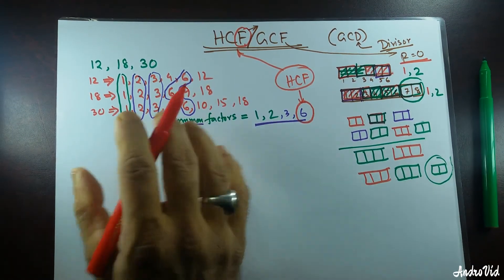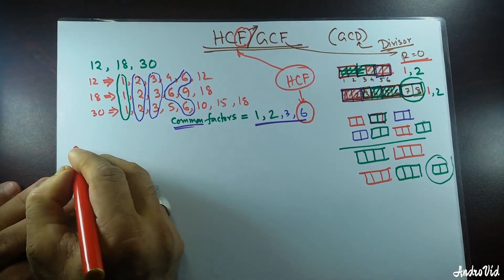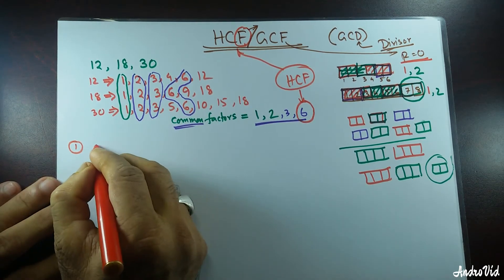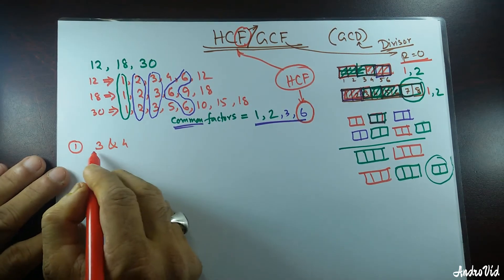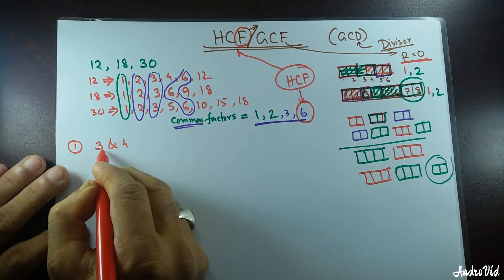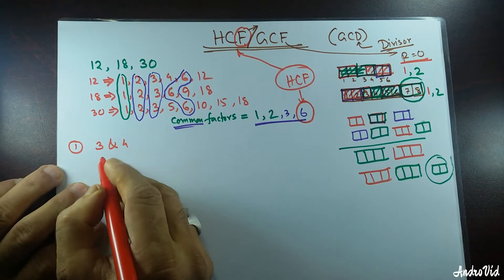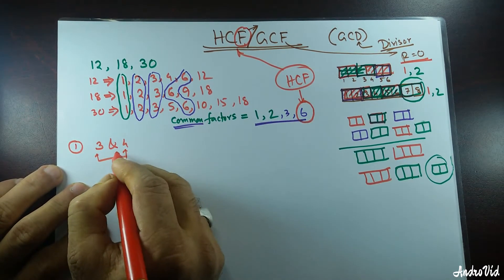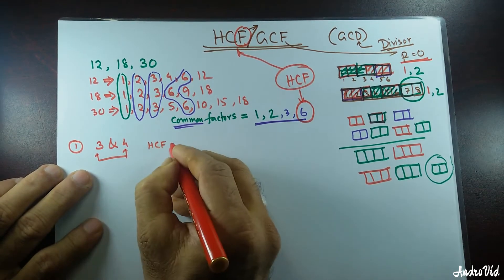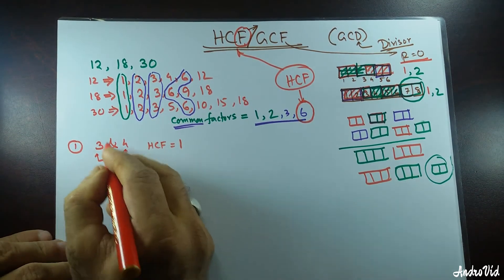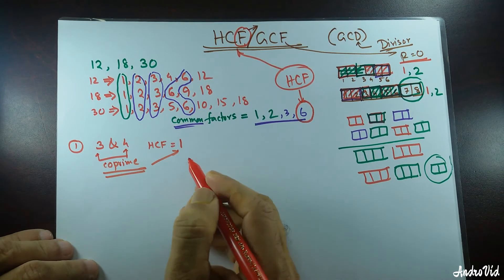Now, there are other ways to find out a highest common factor. I'll show you a few, but first, you need to know if you are given two numbers, let's say 3 and 4. When two numbers have nothing in common except 1, then we call that co-prime. When you have two numbers that are co-prime, then the HCF is going to be 1.